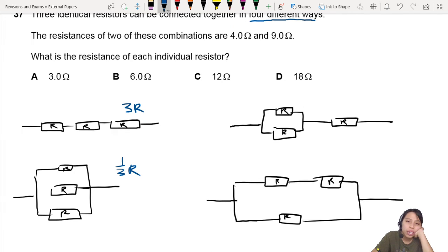How about this one on the right, top right? Two in parallel, one in series. So two in parallel here will be half R plus R, one point five R. Something like that. Yeah, double check and see.